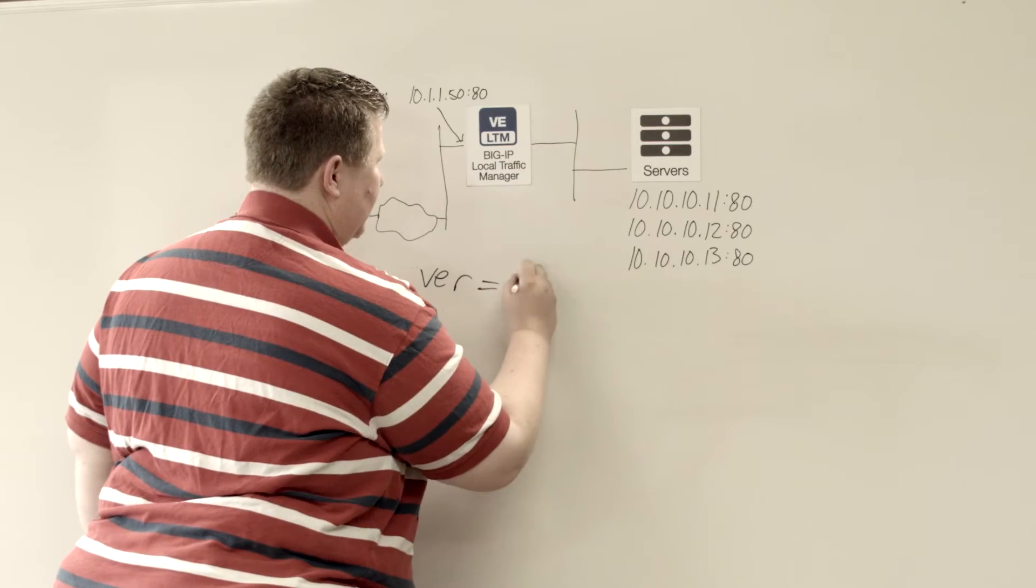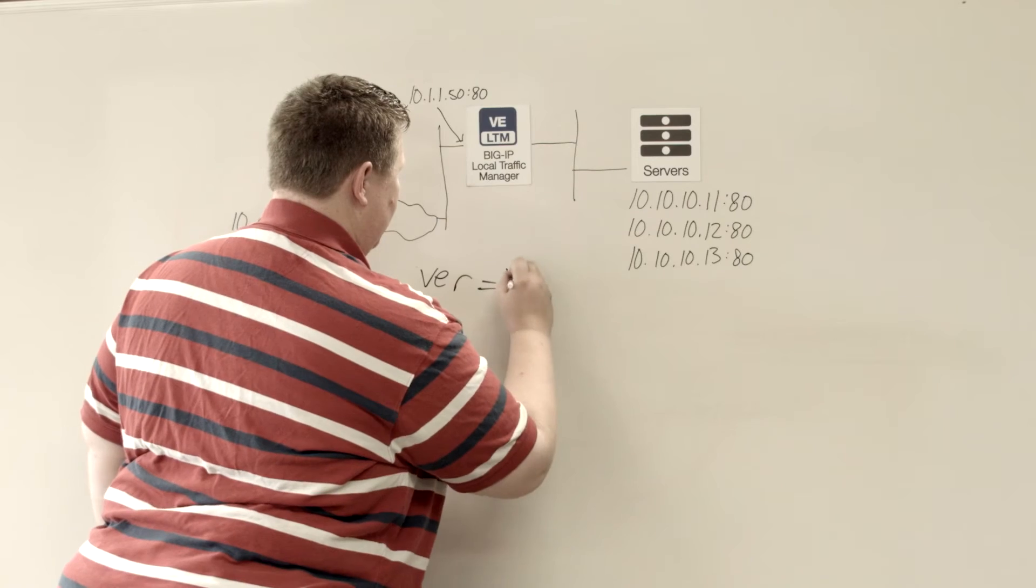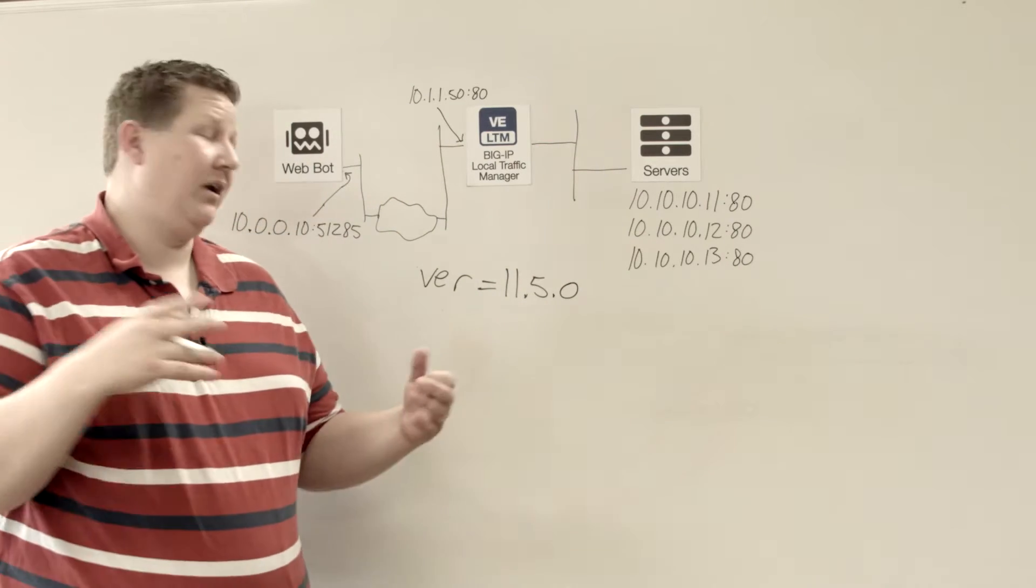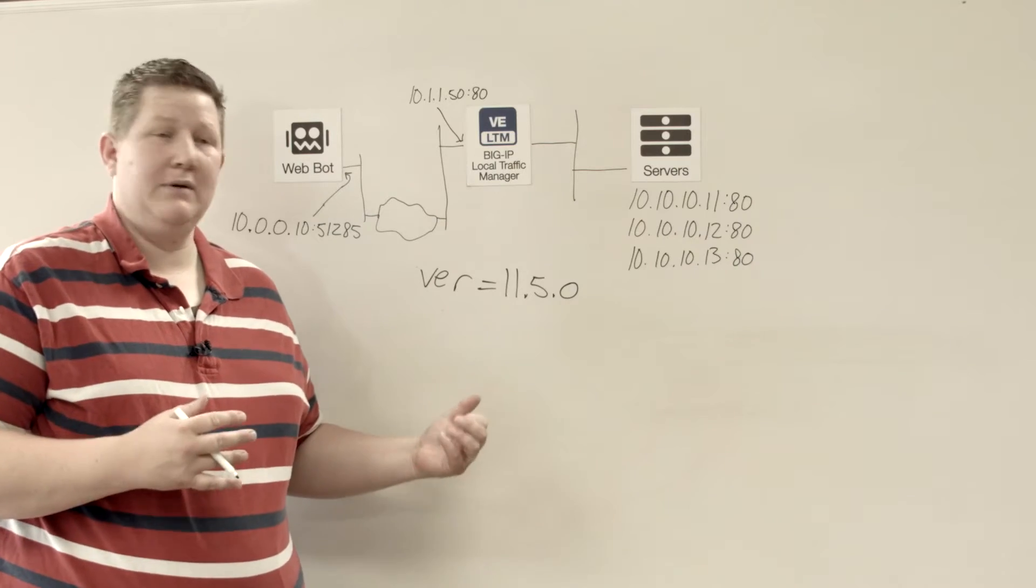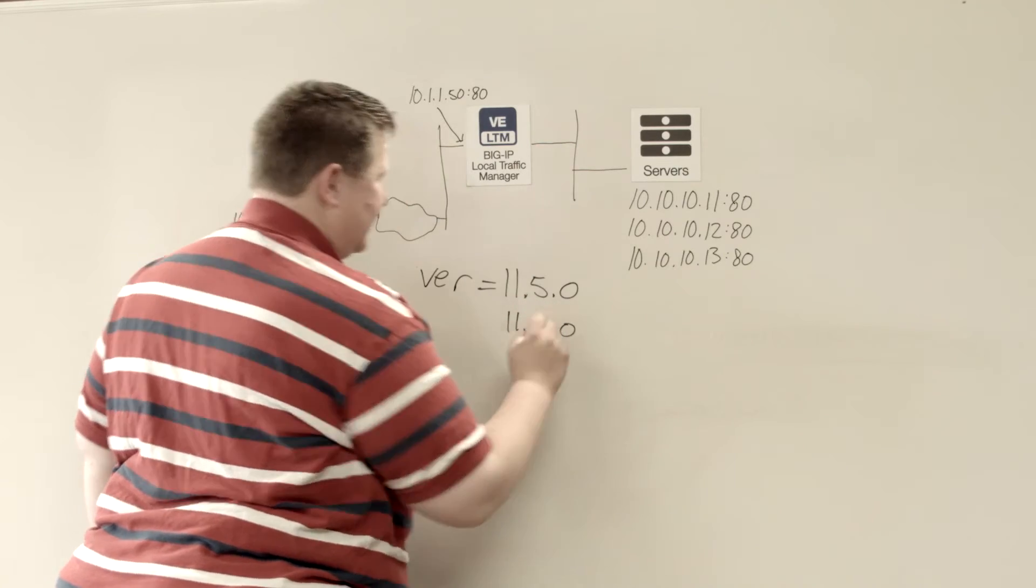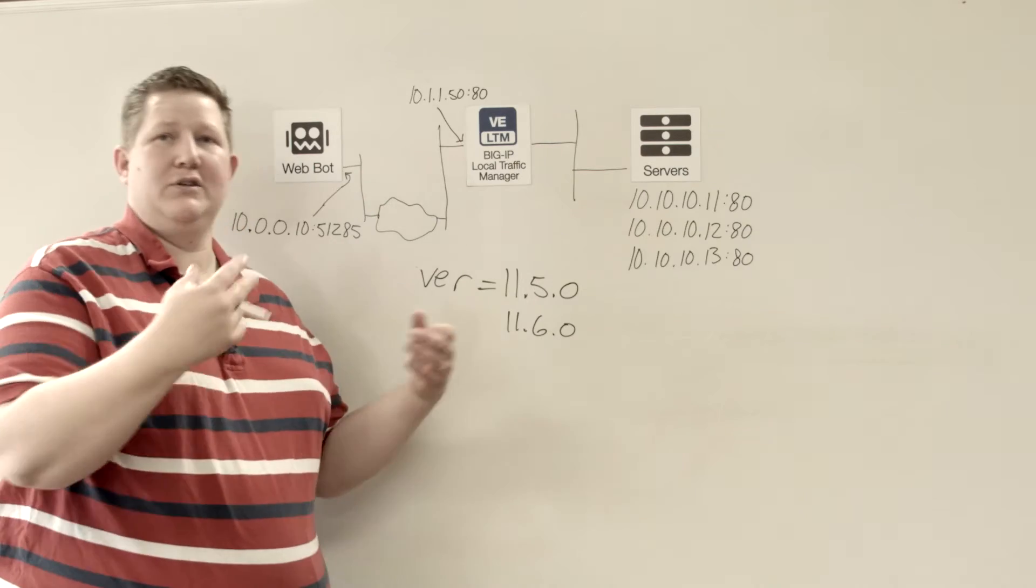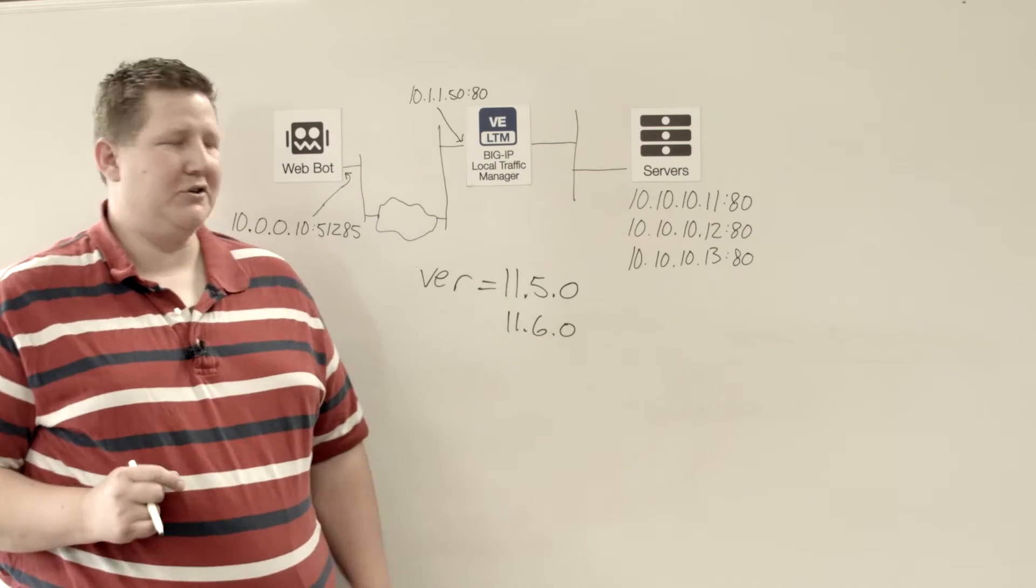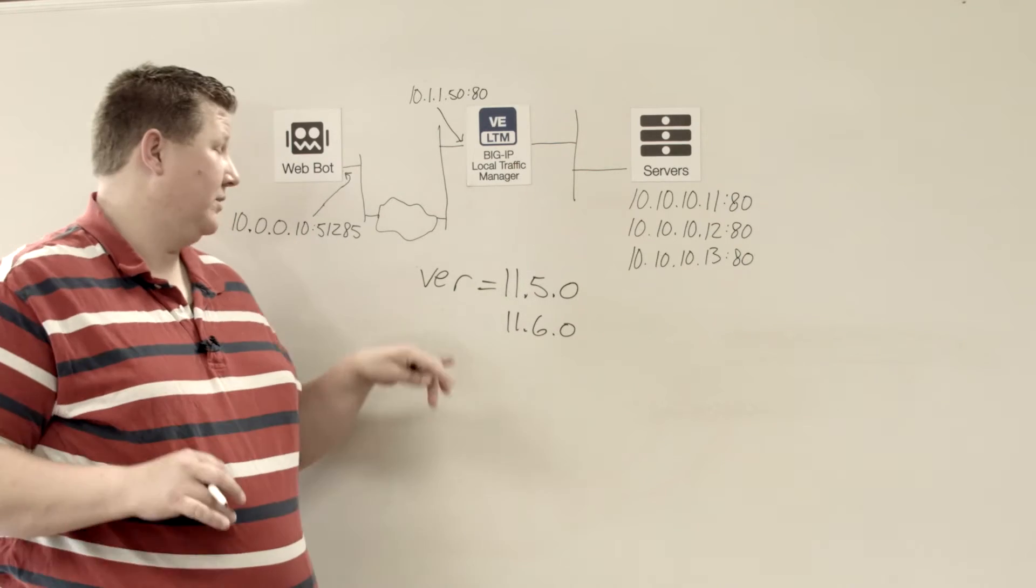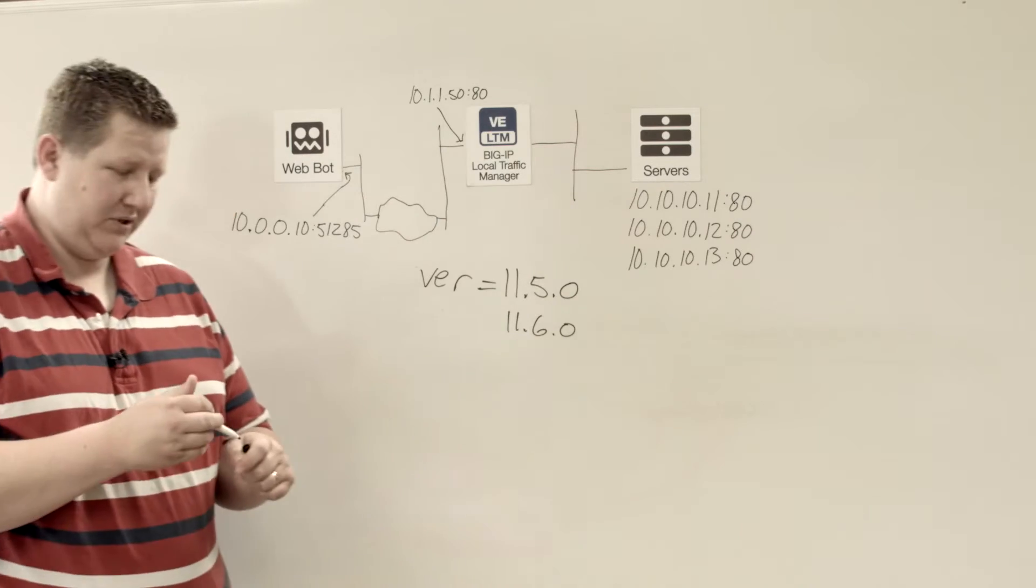So when you do a ver equals 11.5.0, you're making a query that's specific to the 11.5 version. And so if you want to add that parameter as an 11.6.0, and that's so if your big IP moves from 11.5 to 11.6 to 12.0 and whatever versions down, but your requests are attached to a specific version, it provides some consistency in the results that you'll get returned.